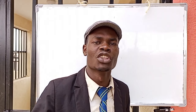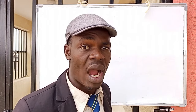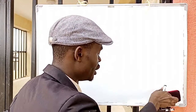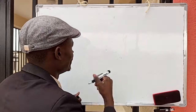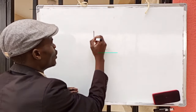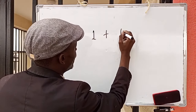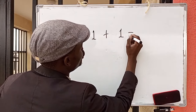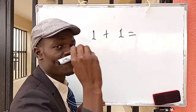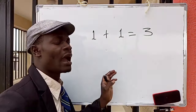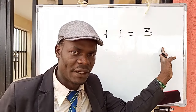1 plus 1 is equal to 3. It's equal to 3. How do we get 3?